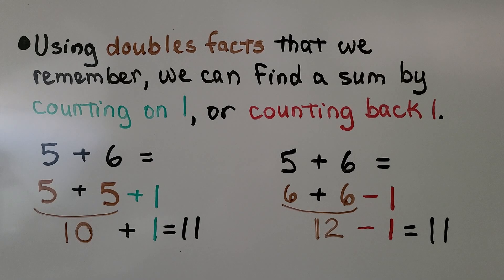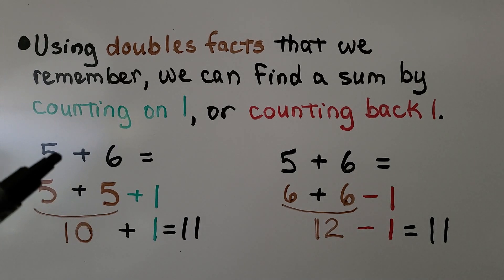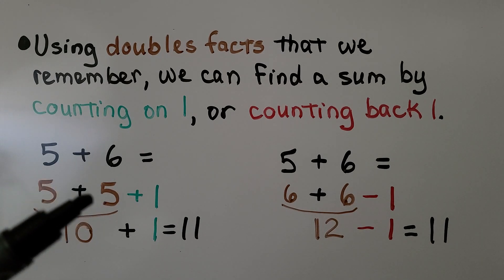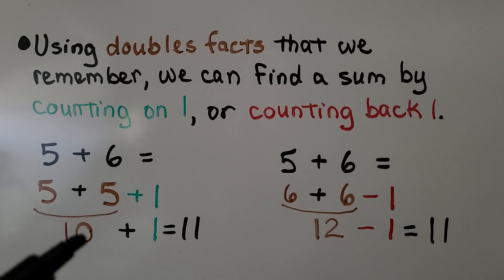Using doubles facts that we remember, we can find a sum by counting on 1 or counting back 1. For 5 plus 6, we can think of the doubles fact 5 plus 5, which is equal to 10. 6 is 1 more than 5, so we've got 5 plus 5 plus 1 more. We've got 10 plus 1 more. That's 11.